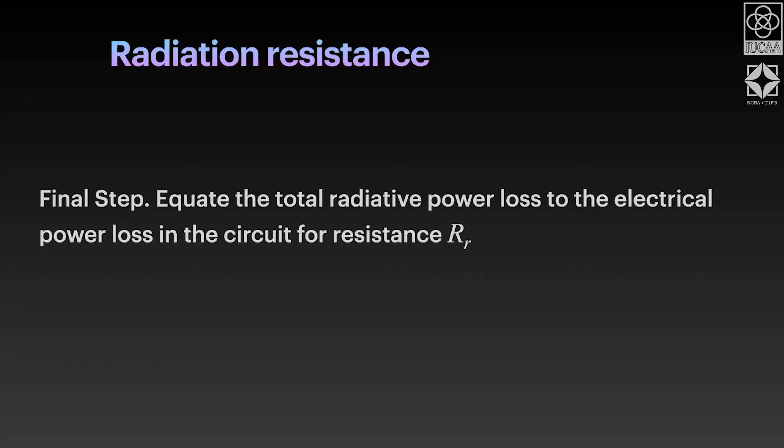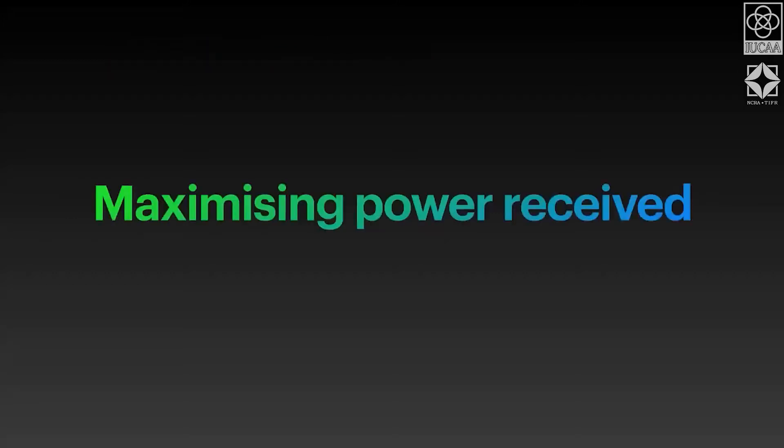Now what we have, so we have two elements that we have taken care of. In the feed we have the current distribution, and now we know what sort of resistance it has. The reactance is again somewhat involved calculation if one needs to take reactance into account in the antenna. But we can always make this assumption that we are working in a limit where only the resistance dominates and the reactance is not that important.